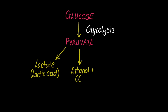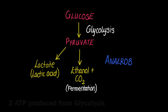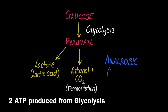Now if there continues not to be oxygen present, the pyruvate is broken down into lactate in animal cells, or if it's in a yeast, the yeast will ferment and produce ethanol and carbon dioxide. This does not produce any additional ATP, so all you have are the two ATP that were produced from glycolysis.